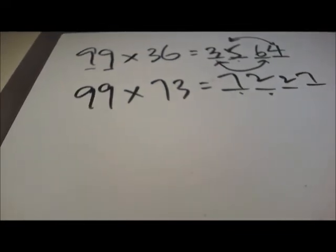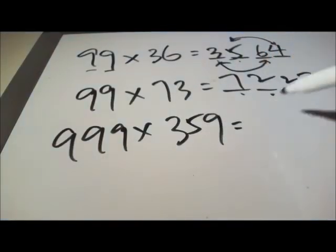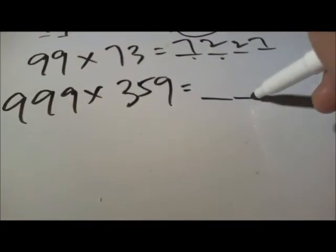Okay, so now how about 3 digits? 999 times 359. So obviously you have 6 digits. We have 3 digits here, 6 and 3 and 3.